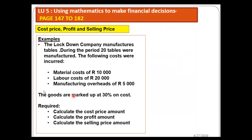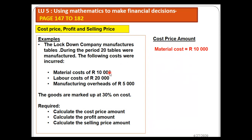The goods are marked up at 30 percent on cost, meaning the markup for this business is 30 percent. The requirements are to calculate: (1) the cost price, (2) the profit amount, and (3) the selling price. For the cost price, since this is a manufacturing concern, the cost price consists of all costs incurred in producing the tables — so I need to look at material cost, labor cost, and manufacturing overheads.